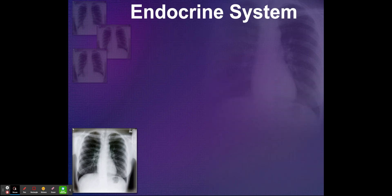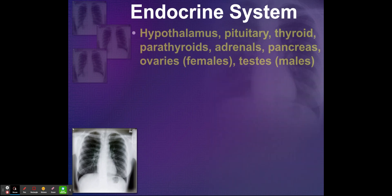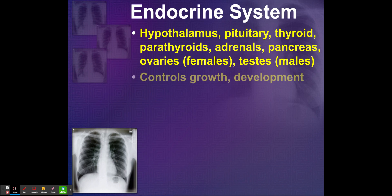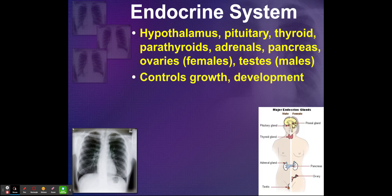You have your endocrine system, which includes your hypothalamus, pituitary, thyroid, parathyroids, adrenals, pancreas, ovaries, and testes for females and males. It controls growth and development and your metabolism — those are all hormone-producing organs.